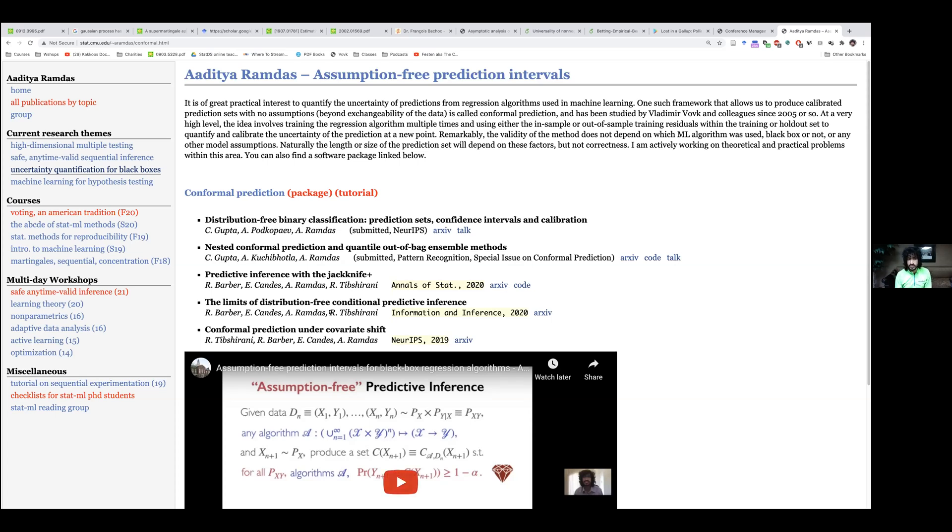The early works were on regression. So the ones that are published were on regression algorithms. How do we quantify uncertainty, non-asymptotically in a frequentist fashion, no Bayesian assumptions about some prior being correctly specified, no algorithmic assumptions. So that was for the regression context.